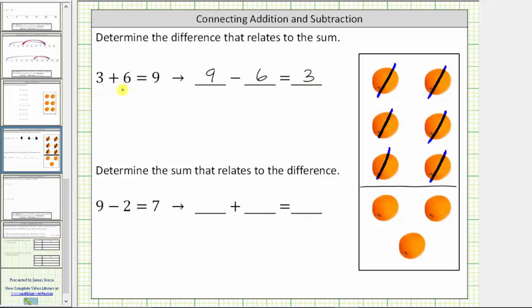So the sum of three plus six equals nine relates or corresponds to the difference nine minus six equals three.